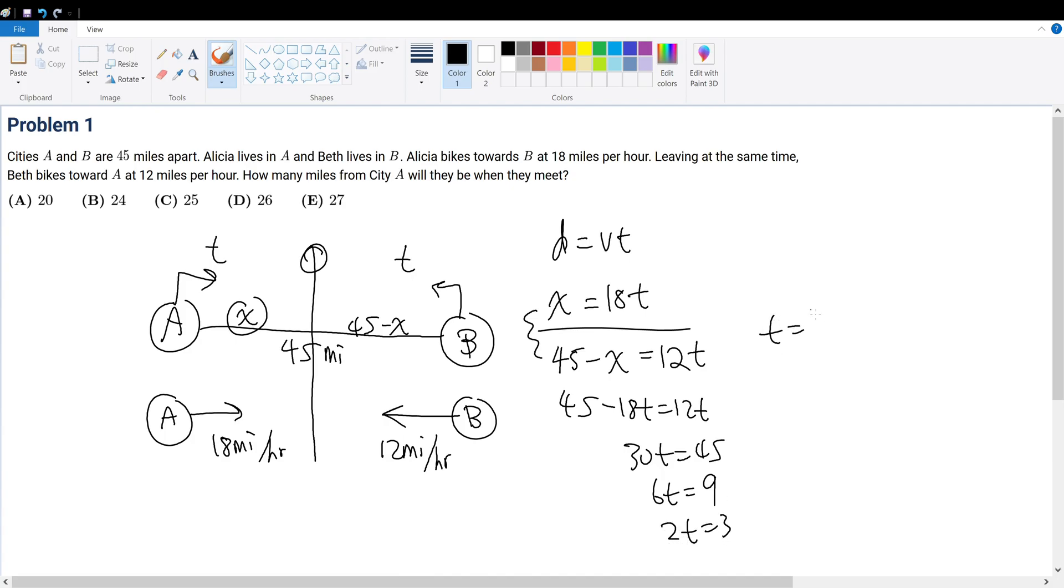Therefore t equals 3/2 hours. How many miles from city A? That's simply 18 times 3/2, which equals 9 times 3, which equals 27 miles. The answer is choice E.